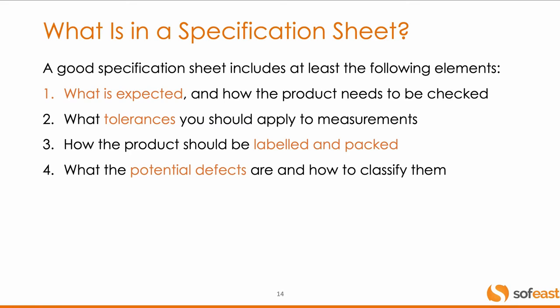The specification sheet becomes the checklist for the inspector. It includes what's expected — for example, this box is supposed to be this kind of yellow, with these dimensions, and so on. The tolerances: anything that can be measured, if possible give it a tolerance. If it's supposed to be 10.0 cm long, what if it's 10.1 cm? Where is the limit? Because it's never going to be exactly 10.0000 and there's going to be variation within the batch. You also need to think about the labeling and the packaging — many people forget about that. And what are the potential defects? Try to think of them in advance.